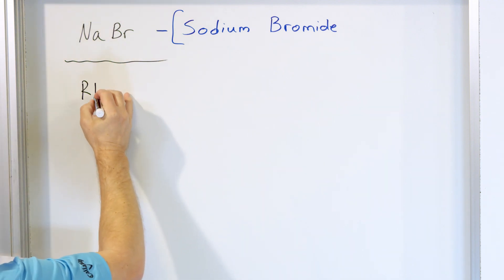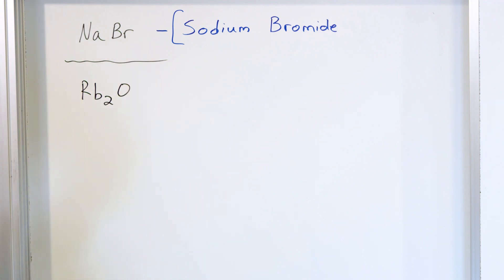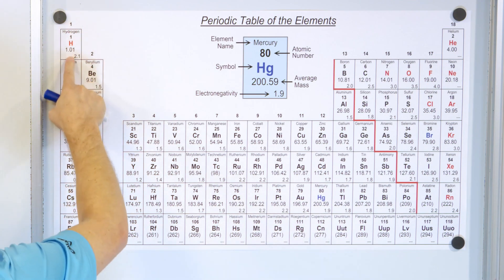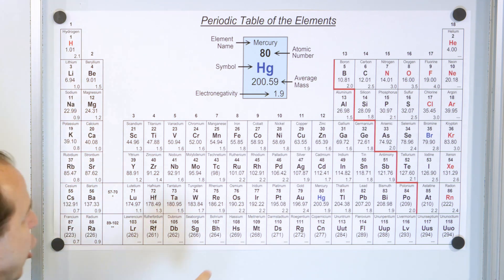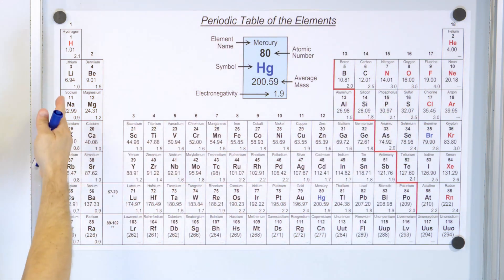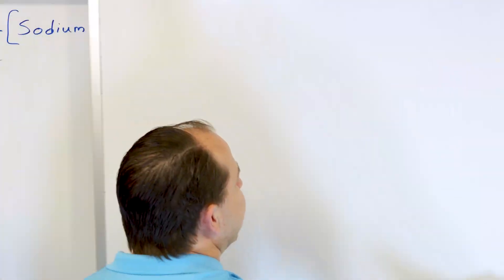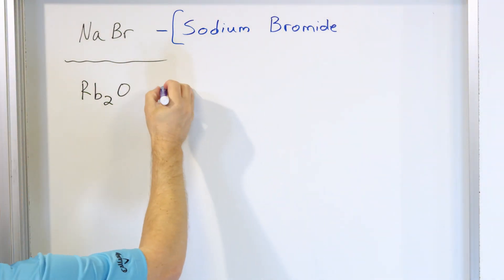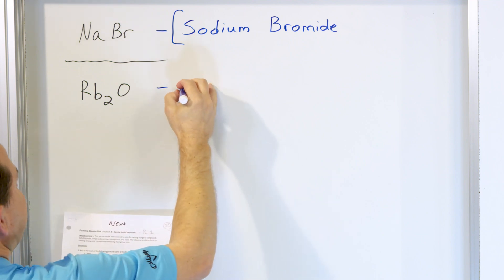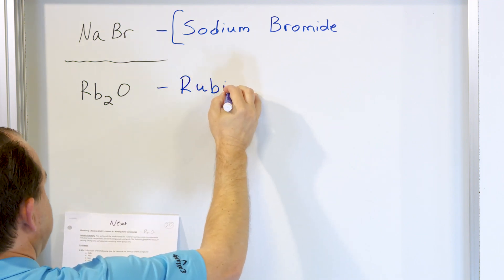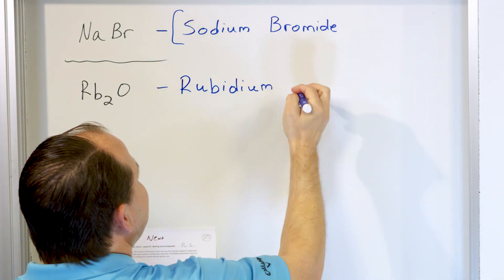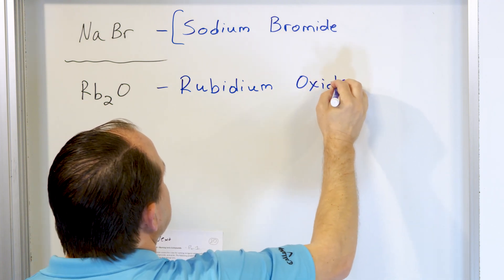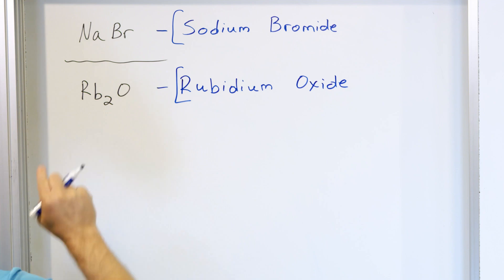Let's talk about Rb₂O. What is Rb on the periodic table? Rb is rubidium — it's in column or group one, same as sodium and potassium. And O, of course, is oxygen. So it's an ionic compound because it's a metal plus a non-metal. We write down the element name rubidium for the first one — no changes — and then oxygen becomes oxide, the IDE ion name. So the name of this compound is rubidium oxide.